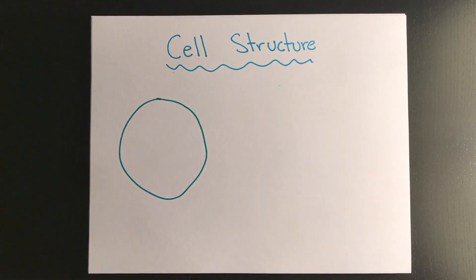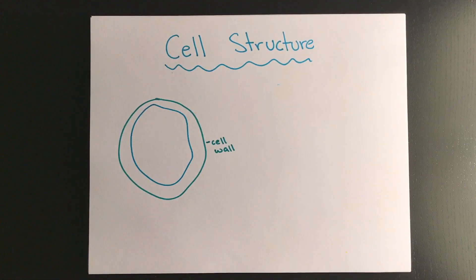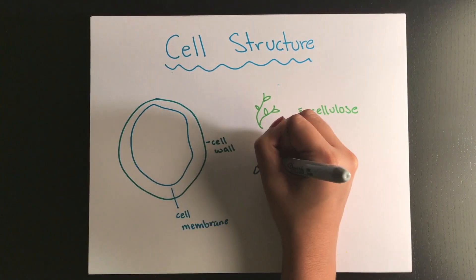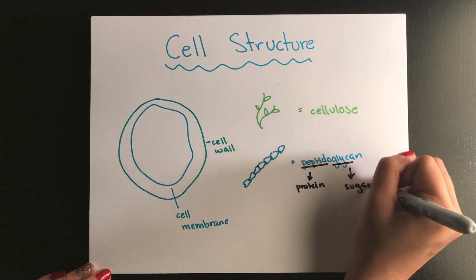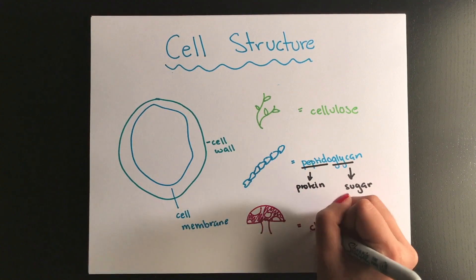Remember that while plants, bacteria, and fungi have cell walls, animal cells do not. Each of these cells' walls are made of different substances, so in plants they're made of cellulose, in bacteria they're made of peptidoglycan, which is essentially a protein and a sugar, and in fungi they're made of chitin, which is a polysaccharide.